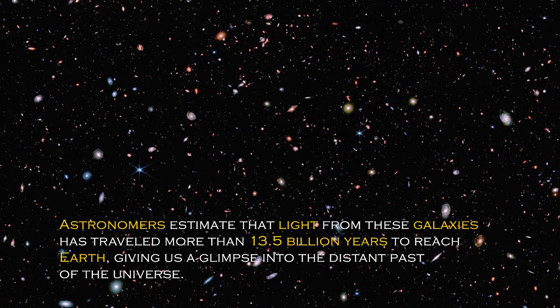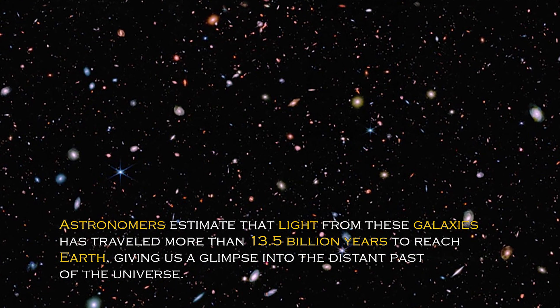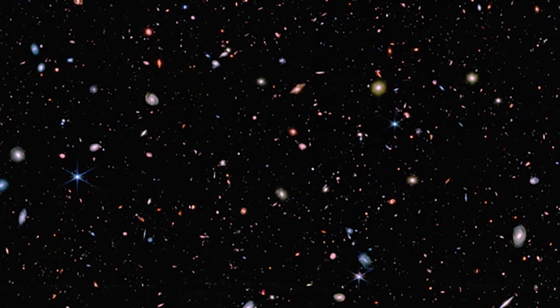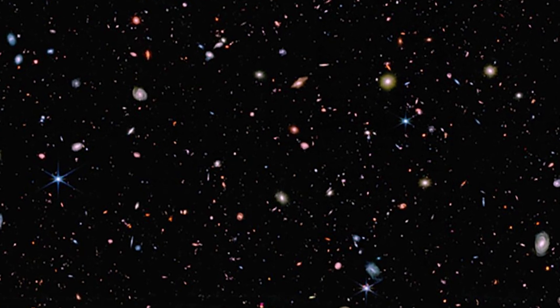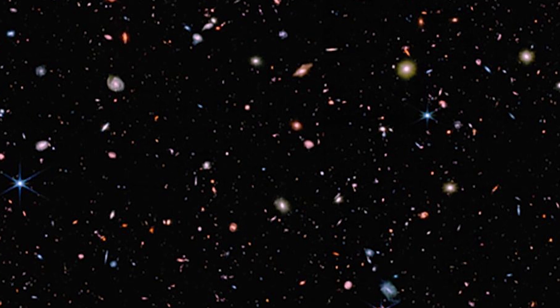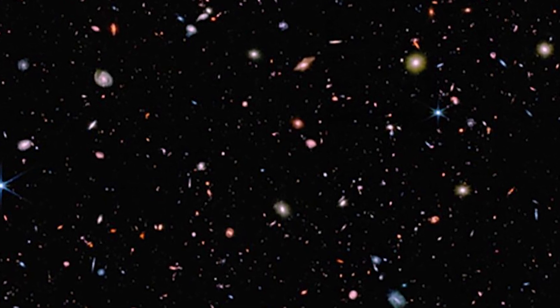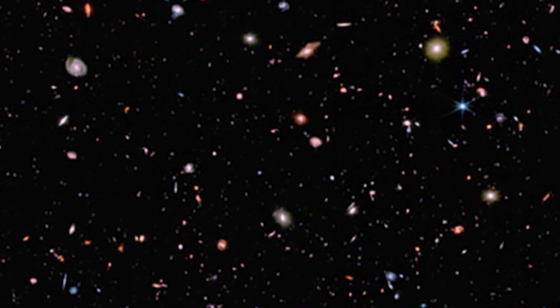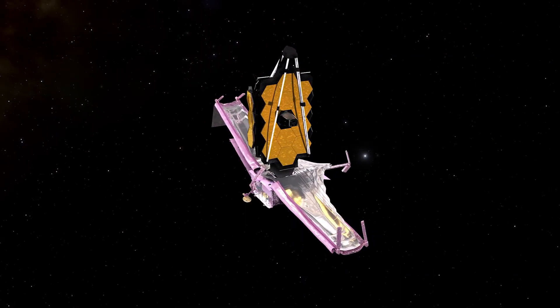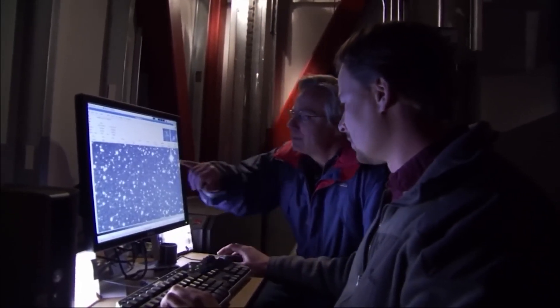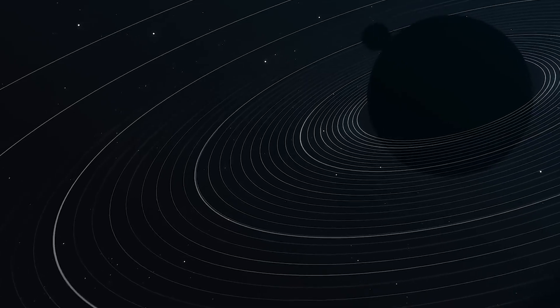Astronomers estimate that light from these galaxies has traveled more than 13.5 billion years to reach Earth, giving us a glimpse into the distant past of the universe. These galaxies were discovered when the universe was young, which sheds light on how quickly the first generations of galaxies emerged. The spectral data confirmed that these galaxies are at the edge of our view, some even farther away than Hubble could see. The discovery is crucial because it validates one of the most important tasks of the James Webb Space Telescope, which is to study the early universe through light that has been traveling for more than 13.5 billion years. The ability to measure extreme redshifts is what sets James Webb apart, allowing astronomers to peer into the infrared range and observe the first galaxies in the universe. The excitement in the air is palpable, as this discovery marks an important milestone in the exploration of the universe and understanding its evolution.